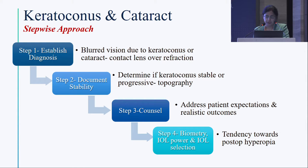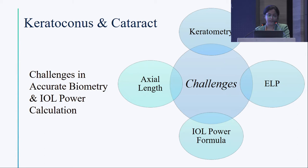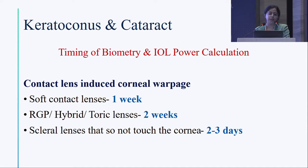Then you come to biometry, IOL power calculation, and IOL selection. Remember, there is a tendency towards postoperative hyperopia whichever formula or keratometry device you use. The challenges in accurate biometry and IOL power calculation include axial length estimation, keratometry, effective lens position estimation, and formula errors. Before you proceed, the timing of biometry is very important — a lot of these patients will be using contact lenses, so you must account for contact lens-induced corneal warpage.